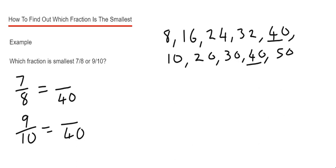Okay, so how many times does 8 go into 40? Well it went 5 times. So we need to times the top number by 5. So 7 times 5 is 35.